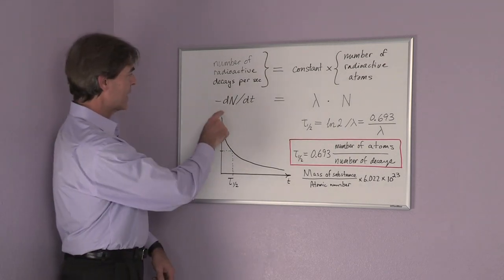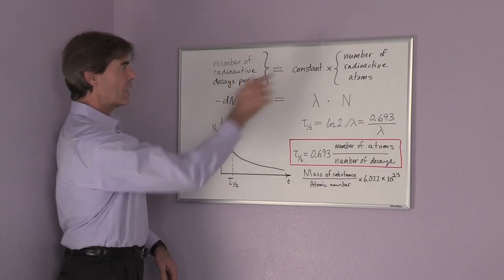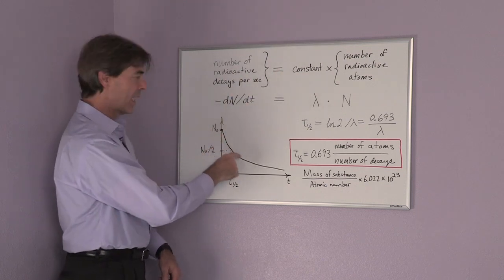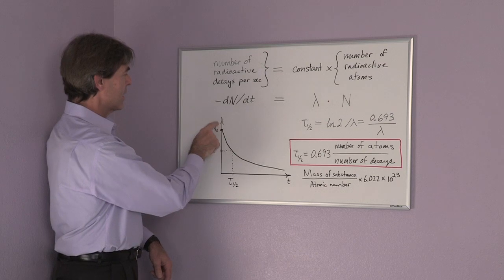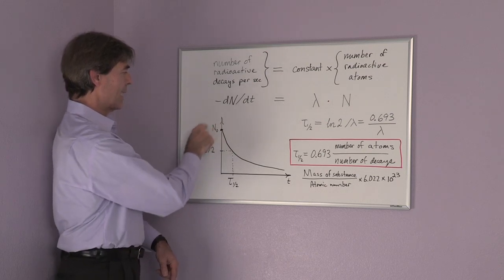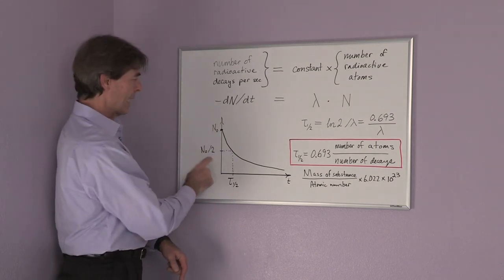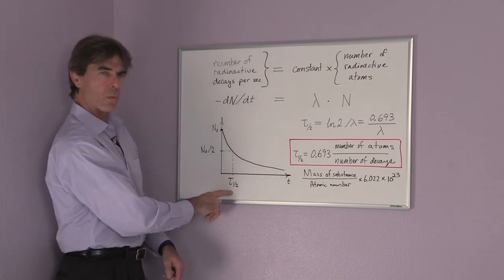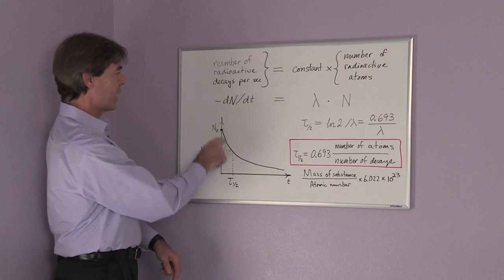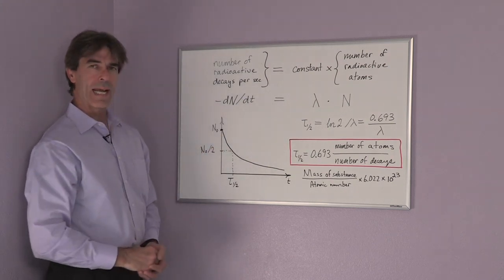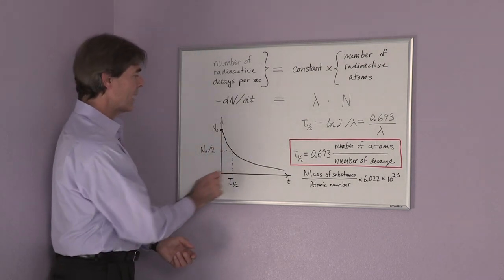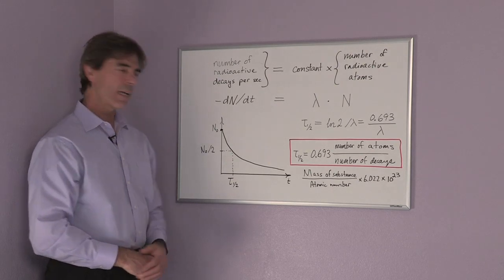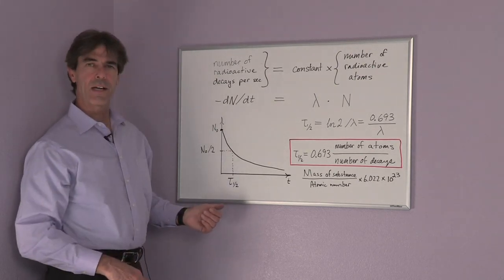Let's look at the number of radioactive atoms as a function of time. You start out with a number N₀, and after a half-life, which I'm calling τ₁/₂, the number of radioactive atoms has decreased by one-half. We don't have to wait this amount of time because it could be very long—in the case of strontium-90, it's about 29 years.